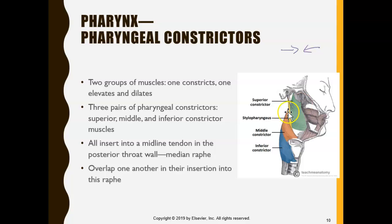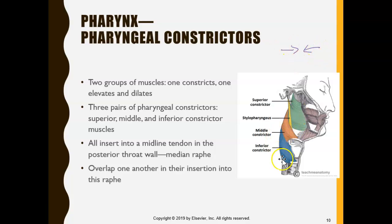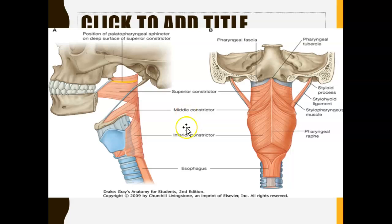When you're swallowing food, the food goes down the pharynx and enters the area near the superior constrictor muscles, which squeeze it. It then goes down to the middle constrictor muscle and gets squeezed again, then down to the inferior constrictor muscle where it's squeezed once more. From there, the food goes down into the esophagus — and that's essentially how we swallow.